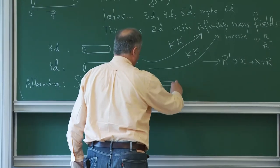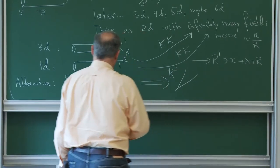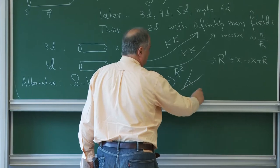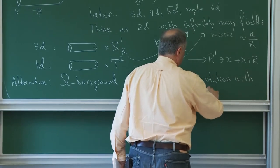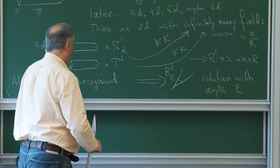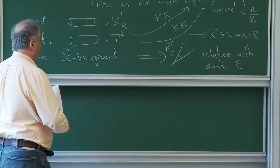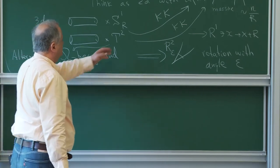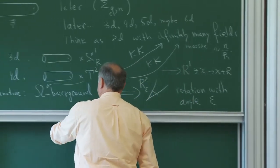The omega background — the only thing we have to think about — is that instead of such identification, we take R2 in the higher dimension and we use the rotation with angle which we call epsilon. So this kind of thing I will call, instead of Kaluza-Klein, R2-epsilon. From the point of two-dimensional theory, when we replace T2 by omega background, this will again be a theory with infinitely many fields, and masses will be related to modes of expansion in spherical functions.